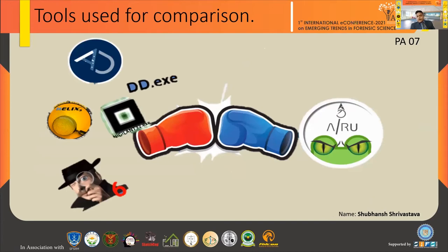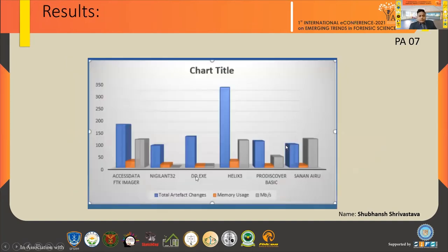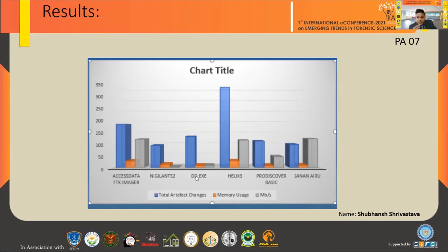These are the tools compared: Access Data FTK Imager, dd.exe, Nigilend32.exe, Helix 3, and Pro Discoverer Basics. In the comparison chart, the blue bar shows total artifact changes, the orange bar shows memory usage, and the gray bar shows acquisition/transfer speed. In a good software, the blue bar should be low, the orange bar should also be low, and the gray bar should be high — meaning fewer registry changes, less memory use, and faster imaging speed.